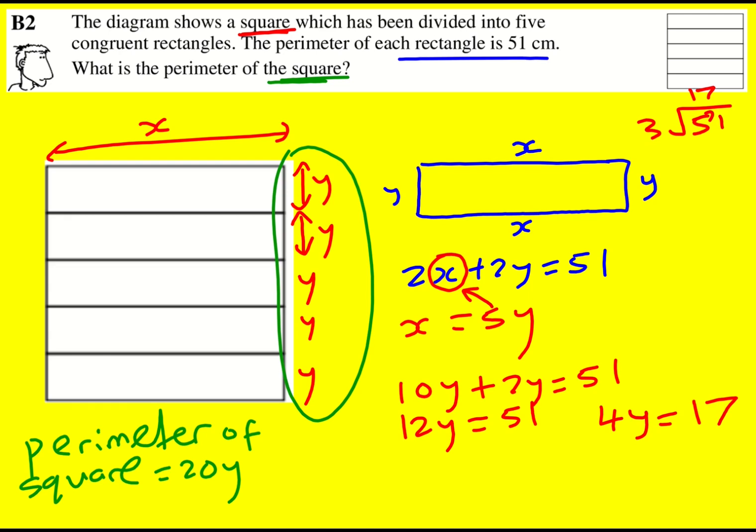So 4y is 17, and therefore 20y, which is 5 times 4y, is going to be 5 times 17. We can times by 10 to give 170, then halve it. The perimeter of the square is going to be 85 centimeters.